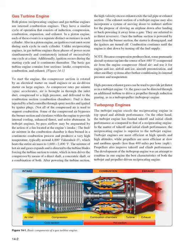Note: because compression produces heat, some pneumatic aircraft systems tap into the source of hot compressed air — approximately 480 degrees Fahrenheit — from the engine compressor, called bleed air, and use it for engine anti-ice, airfoil anti-ice, aircraft pressurization, and other ancillary systems. High-pressure exhaust gases can be used to provide jet thrust as in a turbojet engine, or the gases can be directed through an additional turbine to drive a propeller through a reduction gearing, as in a turbopropeller (turboprop) engine.